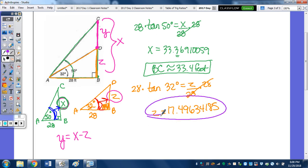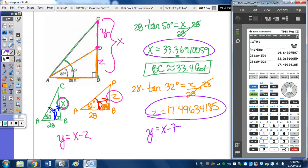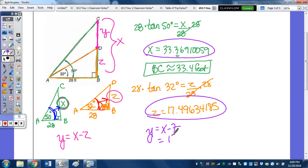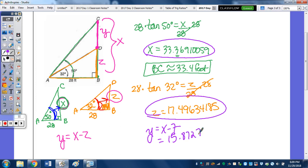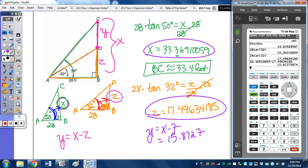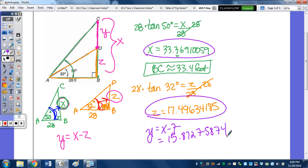Now to find Y, we need to subtract these two values. So using the calculator, I'm not going to round. So Y equals X minus Z. On the calculator, I want to go up and grab that exact answer and then subtract, go up and grab the exact answer for the 28 tan of 32. And we get a final answer of 15.87275874. And we're going to round here to the nearest tenth. So this Y, remember, was the length of CD. So CD is approximately 15.9 feet.